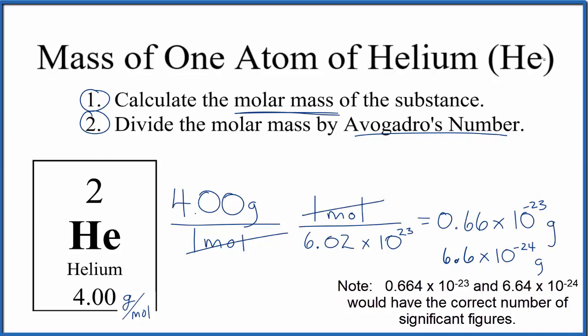So to recap, we found the molar mass for the substance, for our helium, we divided it by Avogadro's number, and we're left with grams.